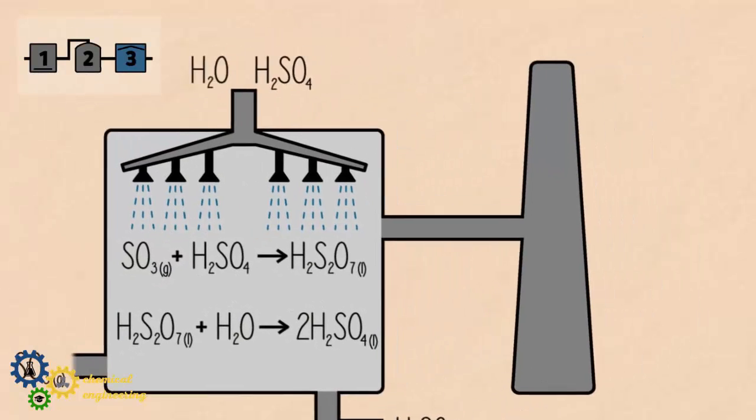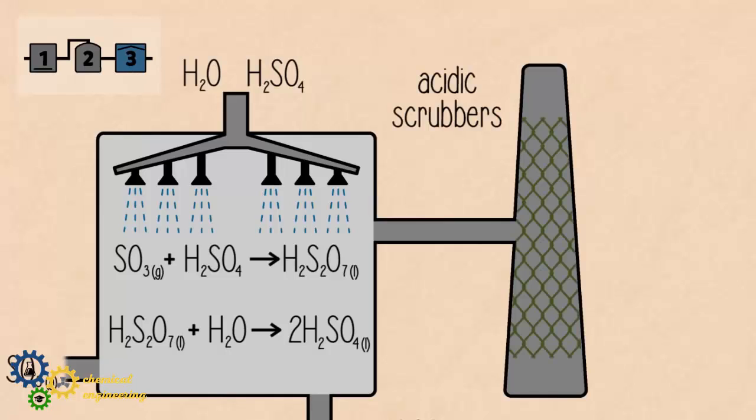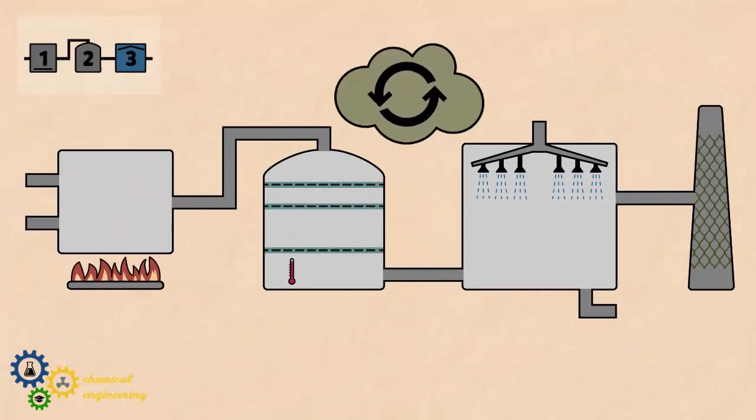The correct answer is that the chimney is usually fitted with acidic scrubbers. These are bases, like sodium carbonate. On contact, they neutralise the fumes, forming salt and water. Other ways to minimise the release of any sulphur oxides is by recycling gases between stages 2 and 3.